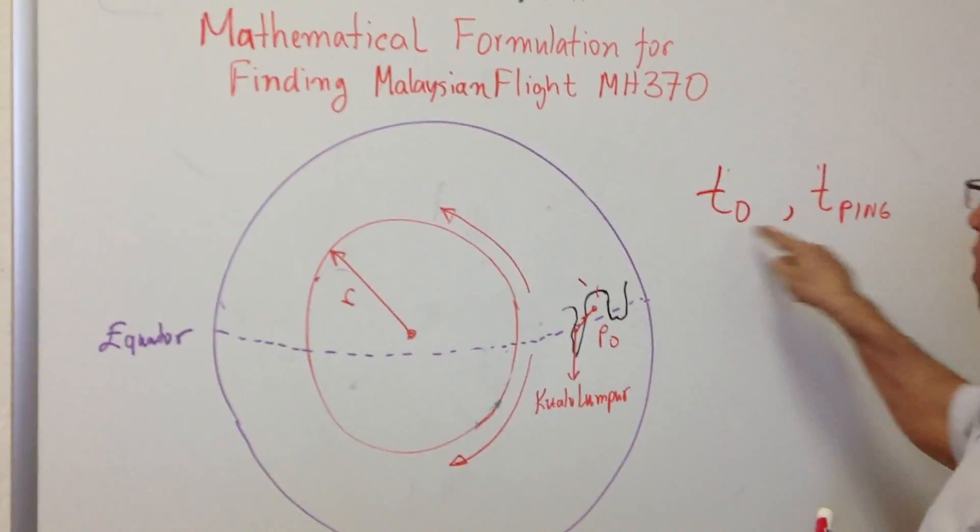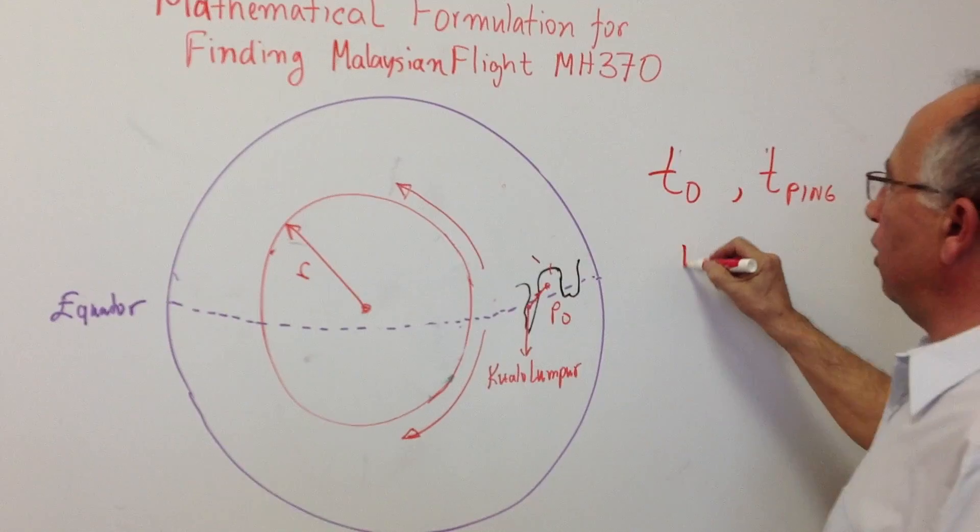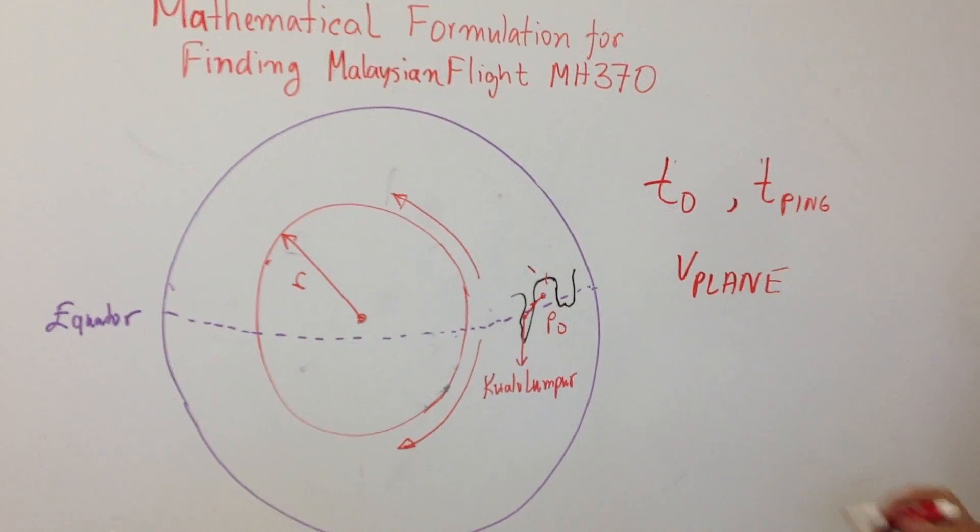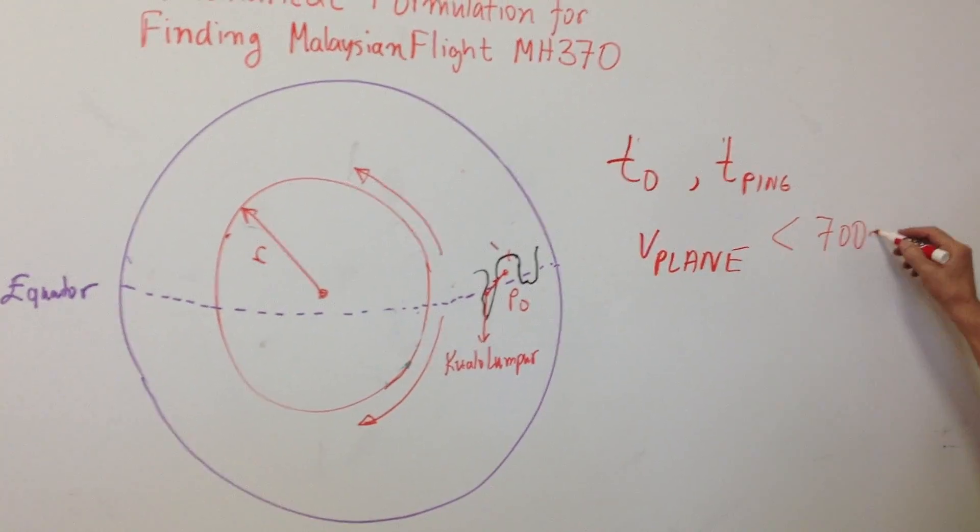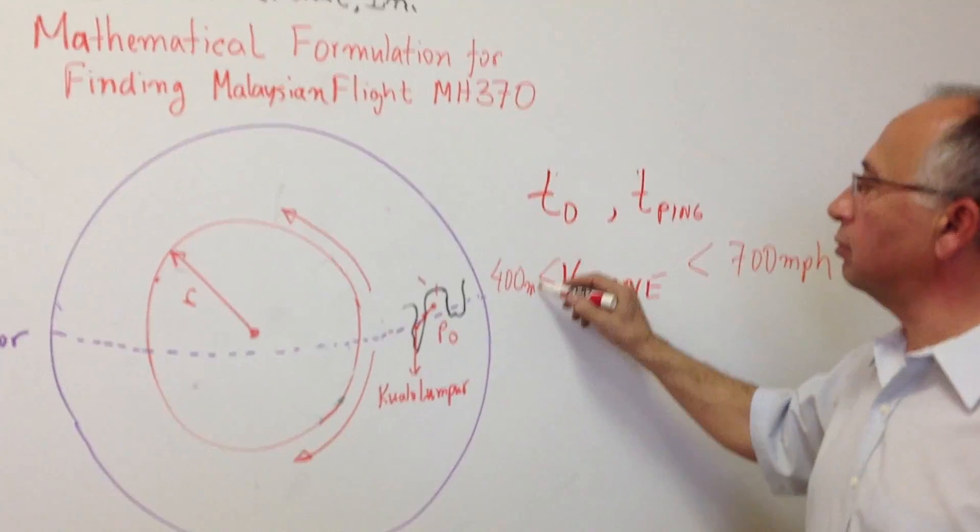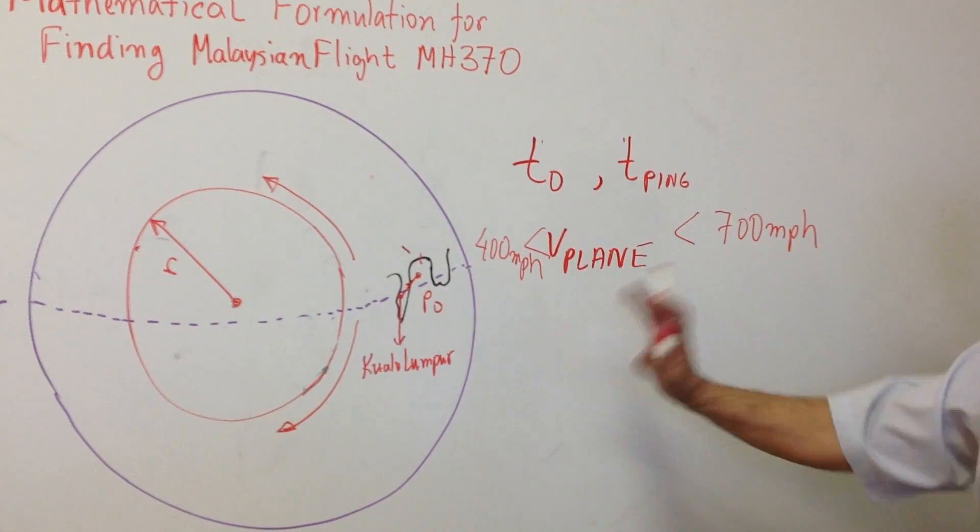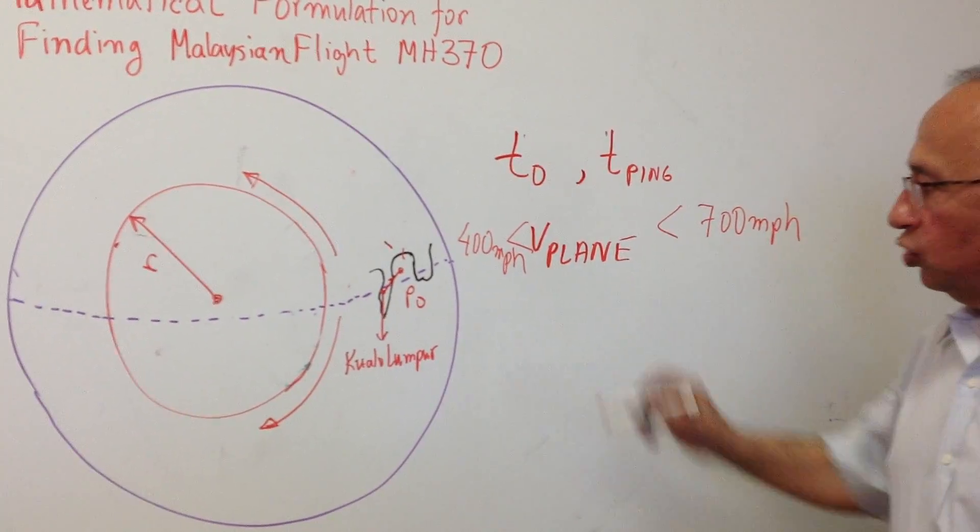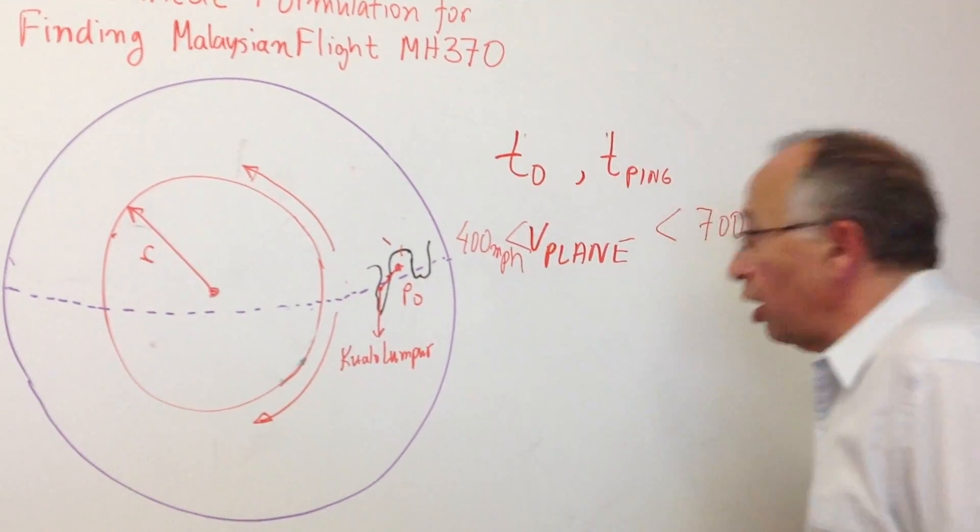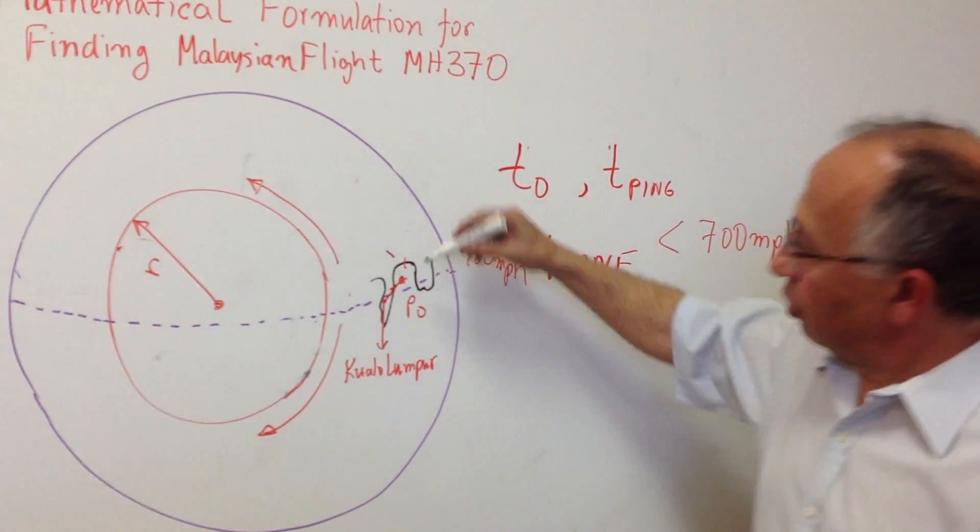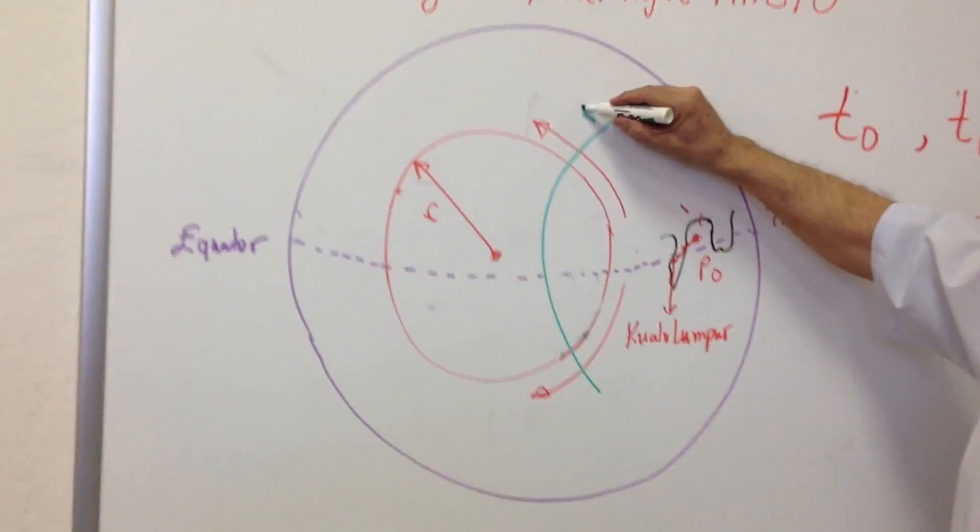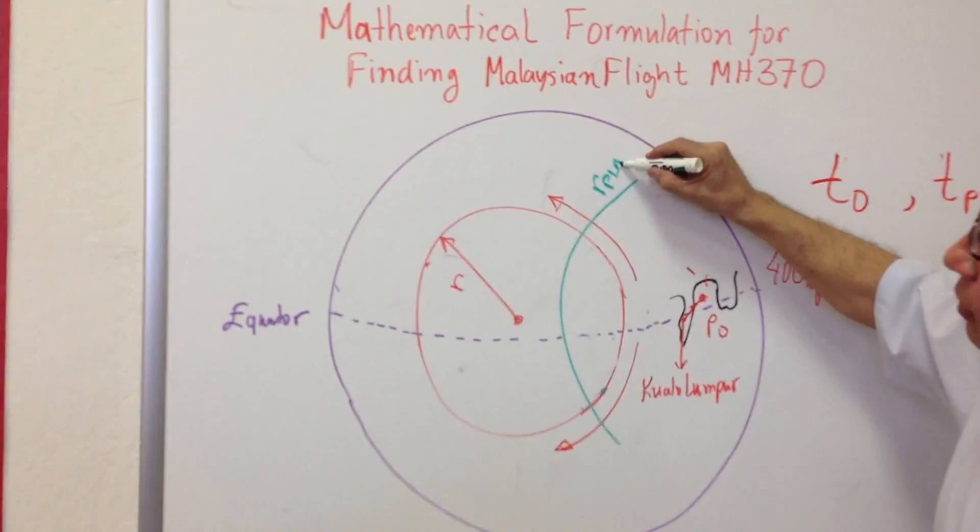The plane's speed is between 400 and 700 miles per hour—not much difference. We know it can't be below that. We know the location where we lost contact. We can now draw another circle, which we call R_plane radius.